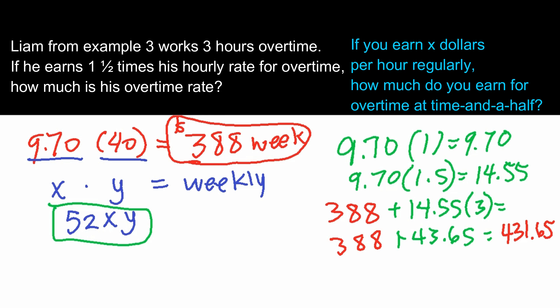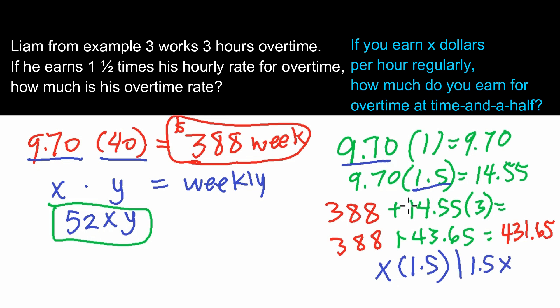The algebraic part: if you earn X dollars per hour regularly, how much do you earn for overtime at time and a half? Since we multiply X by 1.5, our algebraic answer is 1.5X — representing the overtime rate at time and a half.